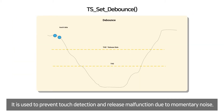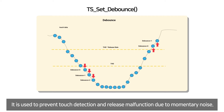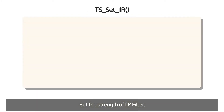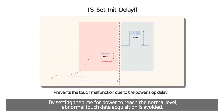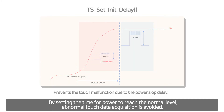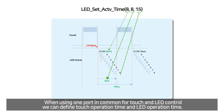It is used to prevent touch detection and release malfunction due to momentary noise. Set the strength of the IIR filter. By setting the time for power to reach the normal level, abnormal touch data acquisition is avoided. When using one port in common for both touch and LED control, we can define touch operation time and LED operation time.